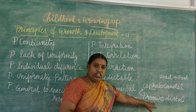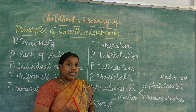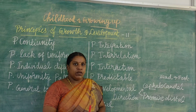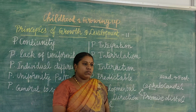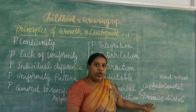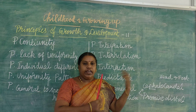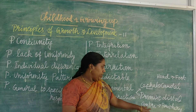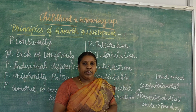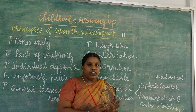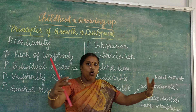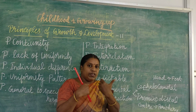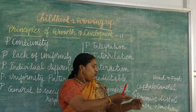Proximodistal refers to the direction from the centre to the periphery — from the middle to the sides. For example, a 0 to 2-year-old baby, when given a doll, will hold it with the whole arm. But when they mature, they can hold it with just their hand or fingers. Development proceeds from the centre to the periphery — that is proximodistal development.